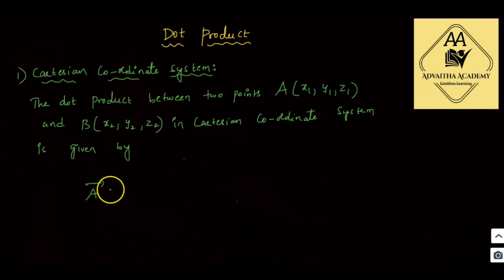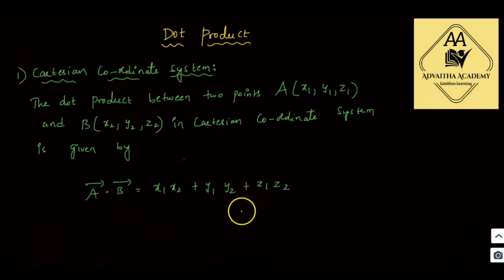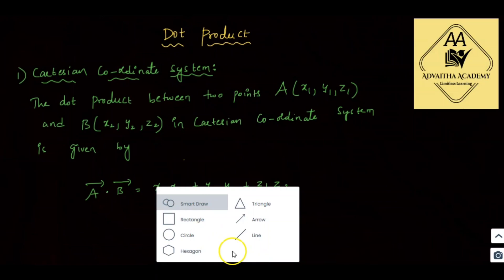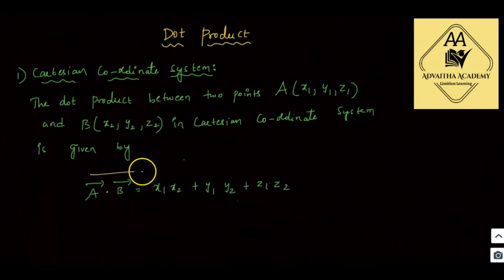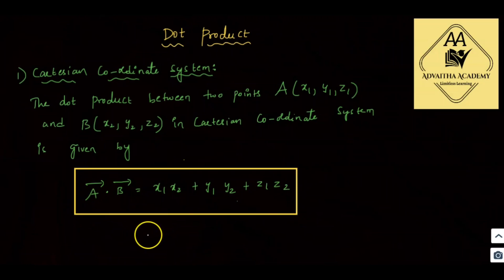The formula is: A bar dot B bar is equal to X1·X2 plus Y1·Y2 plus Z1·Z2. So this formula we have already covered. I will proceed to the next coordinate system.